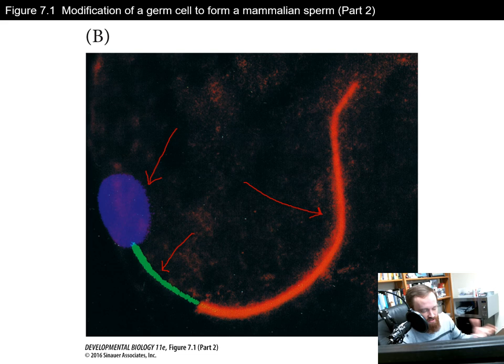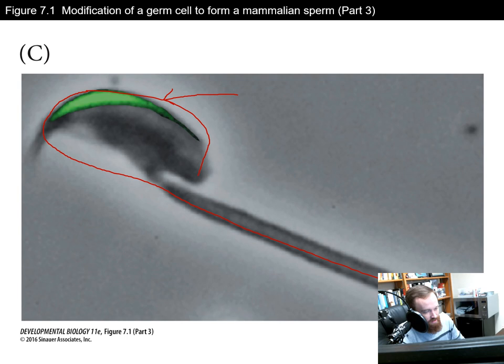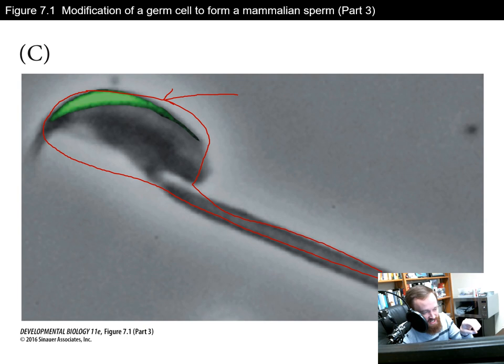In this image, a GFP tag marks the acrosomal vesicle at the very anterior end of the sperm. The acrosomal vesicle is located at the part of the sperm that makes first contact with the ovum, because that is where the digestive enzymes need to be deployed to access the egg.